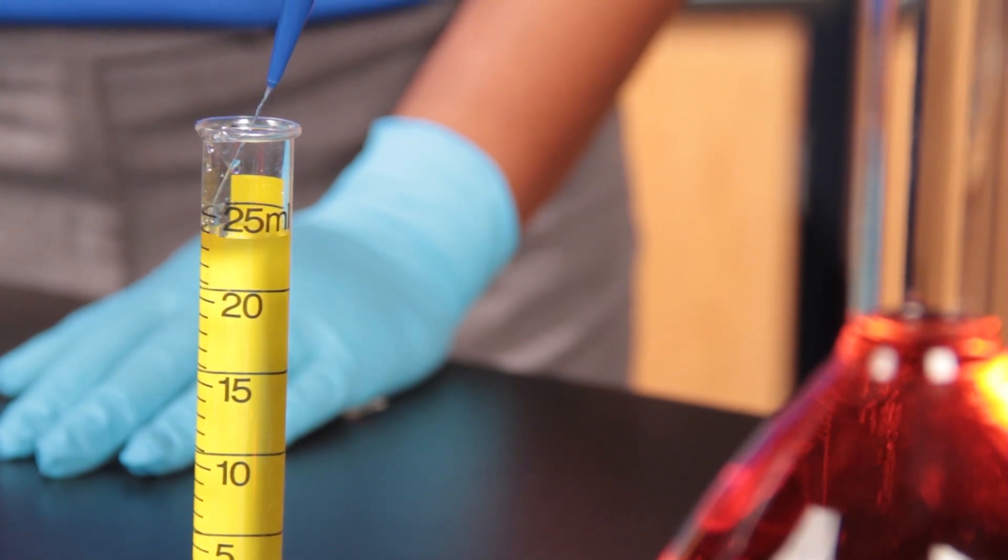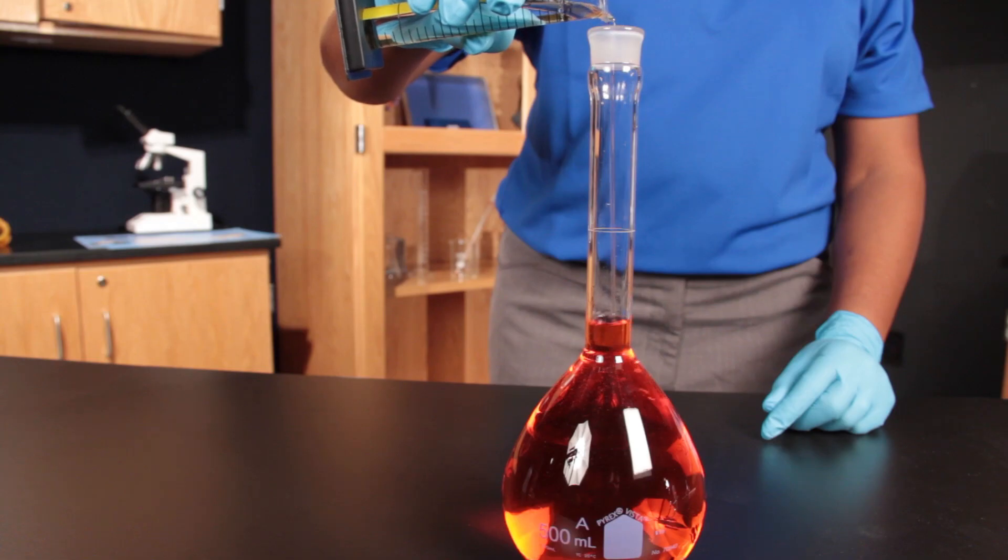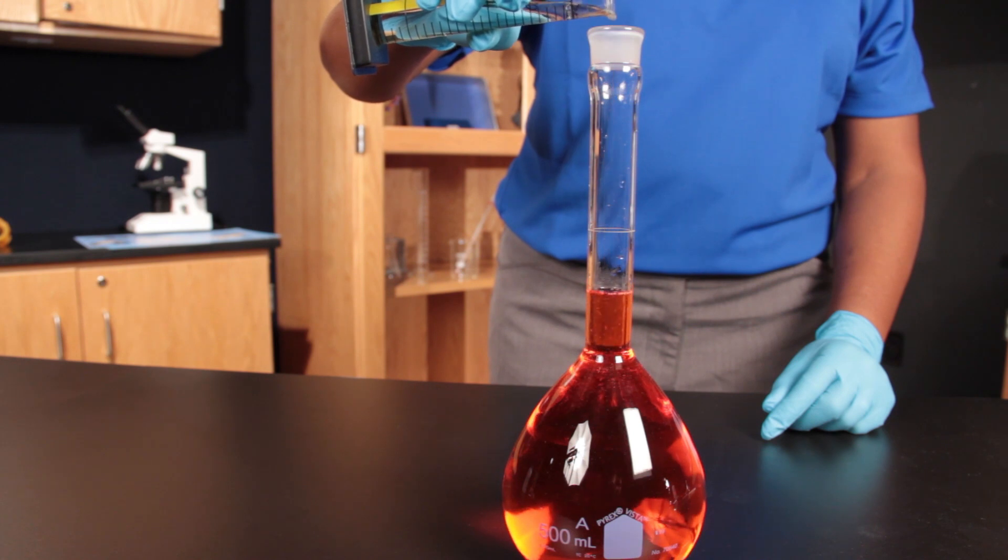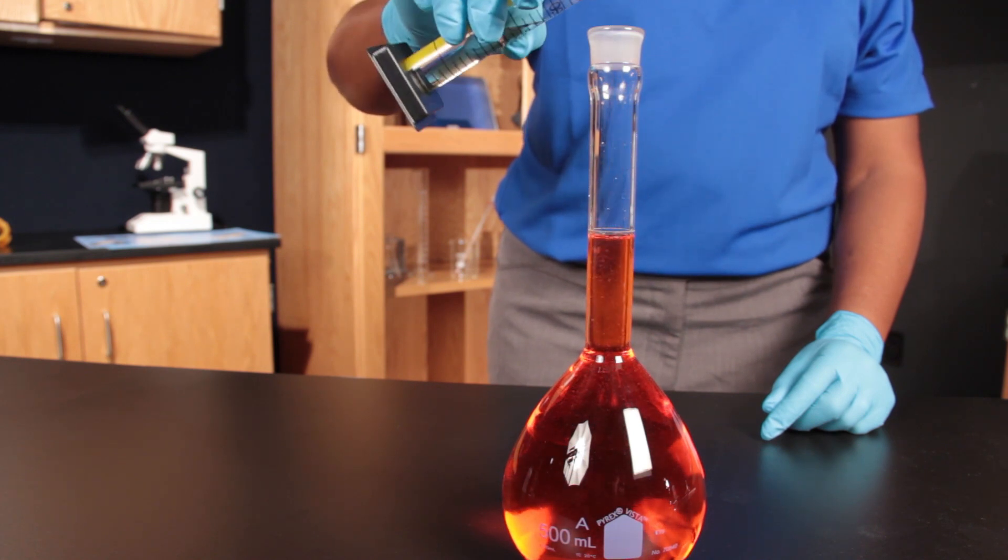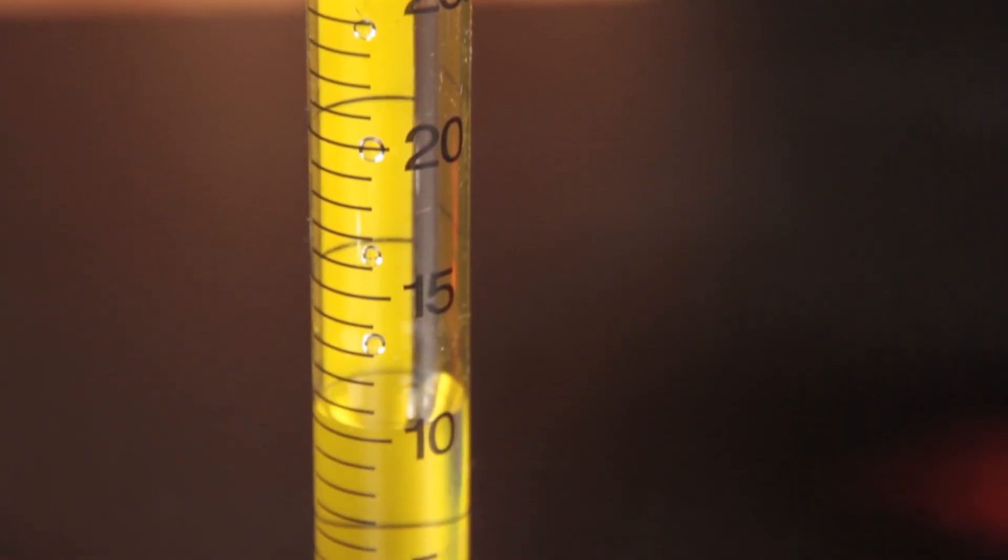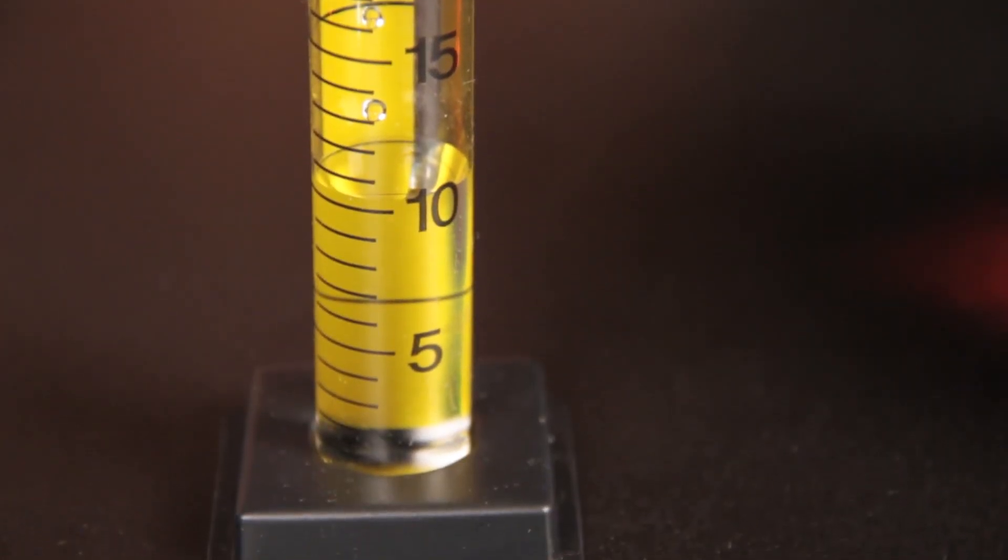Use a small graduated cylinder with water to find out how much volume has been lost. Note the level of water in the graduated cylinder before and after adding it to the volumetric flask to calculate this amount.